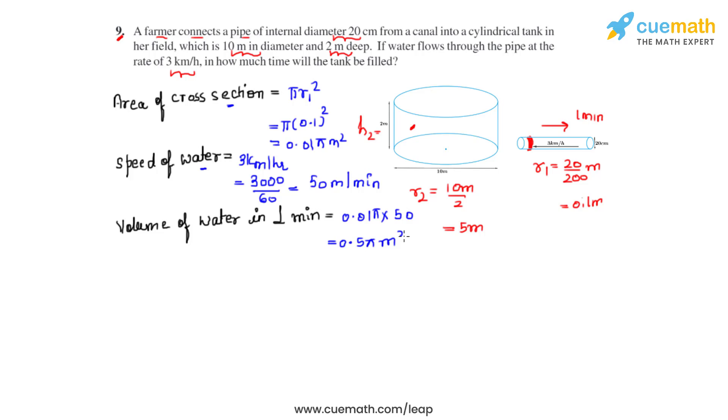This is the amount of water that flows through this pipe in one minute. That will help us calculate how much water will flow through this pipe in, let's say, t minutes. So in t minutes, the water that will flow through the pipe will be t times 0.5π meter cube.